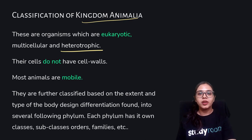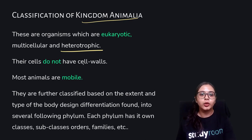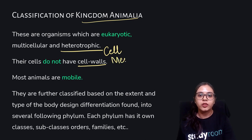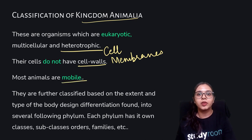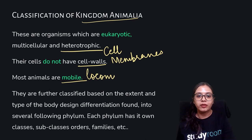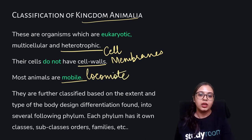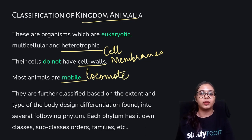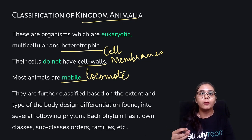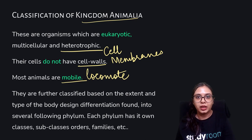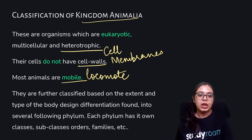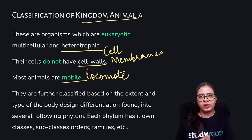Organisms falling under the animal kingdom do not have cell walls; rather they only have the presence of cell membranes. Most animals in the animal kingdom are mobile, meaning they are able to locomote and travel from one place to another. They are further classified based on the extent and type of body design, meaning the kind of internal cellular structure that these bodies have.